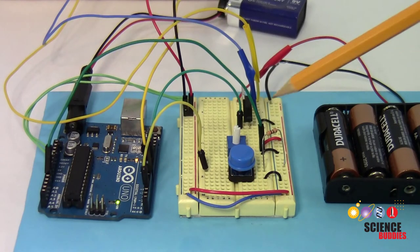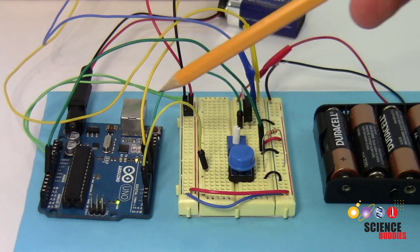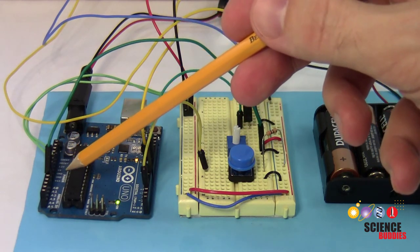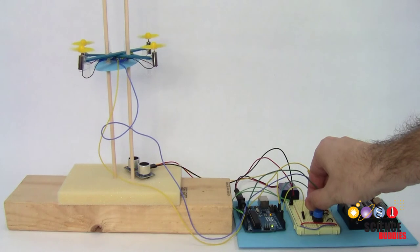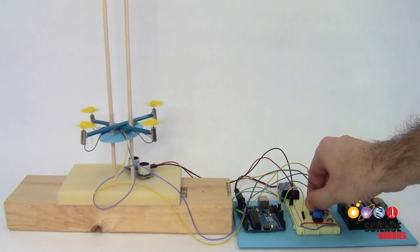A potentiometer in the circuit sends a variable voltage to one of the Arduino's analog inputs. As you adjust this voltage, the Arduino converts it to a desired target height.